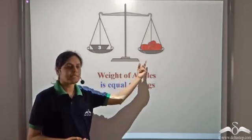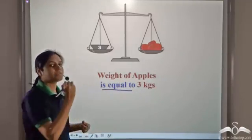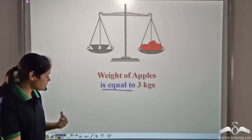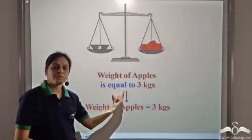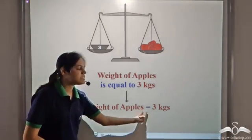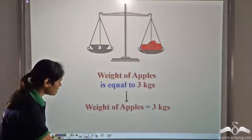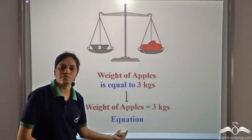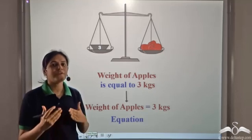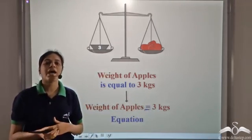Both sides are balanced, so we can say that the weight of apples is equal to 3 kg. We can represent this mathematically by replacing 'is equal to' with an equal-to sign: weight of apples = 3 kg. We can write it in this form, and this is an equation. So when two things are balanced or equal, we can represent it using an equal-to sign, and it is called an equation.